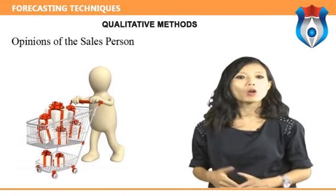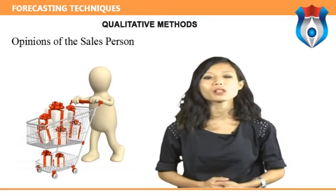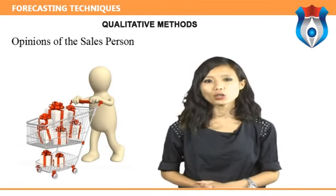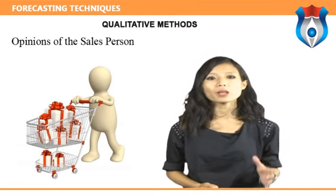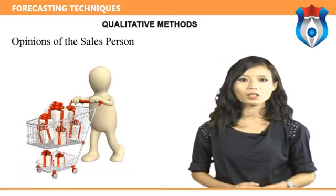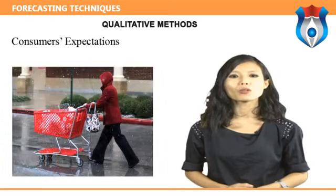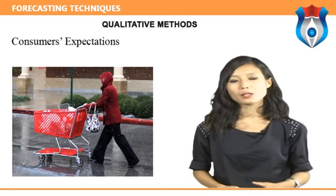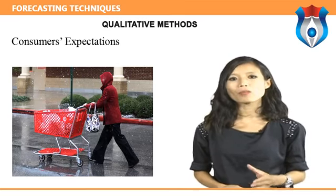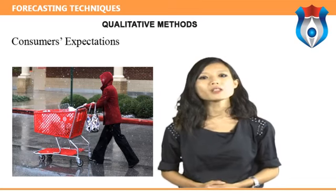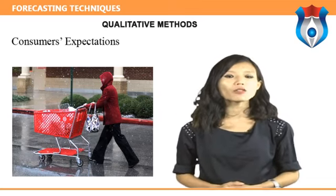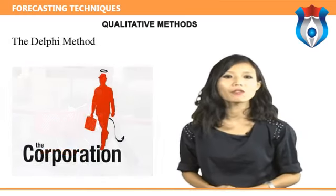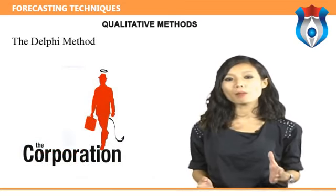Opinions of the sales person: sales people, being closer to consumers, can estimate future sales in their own territories more accurately. Based on these and the opinions of sales managers, reasonable trends of future sales can be calculated. These forecasts are good for short-range planning since sales people are not sufficiently sophisticated to predict long-term trends. Consumer expectation: this method involves a survey of customers as to their future needs. This method is especially useful where the industry serves a limited market; based on the future needs of customers, a general overall forecast for demand can be made.